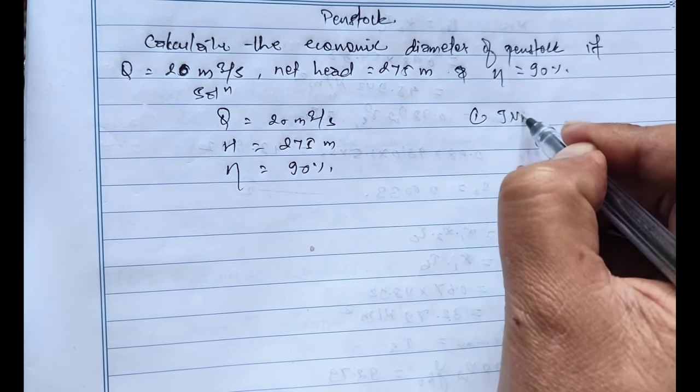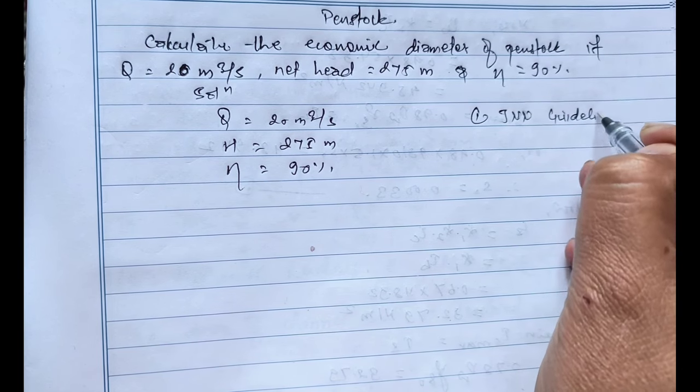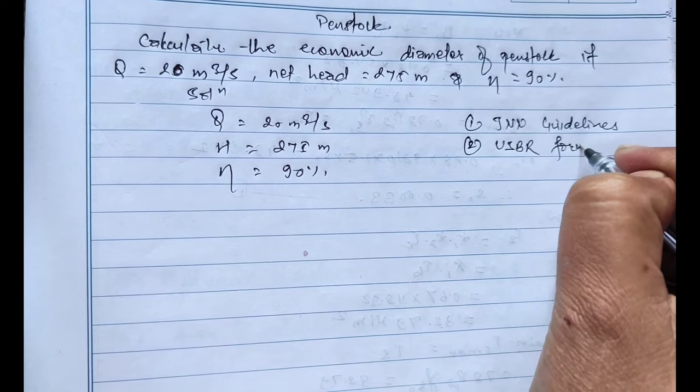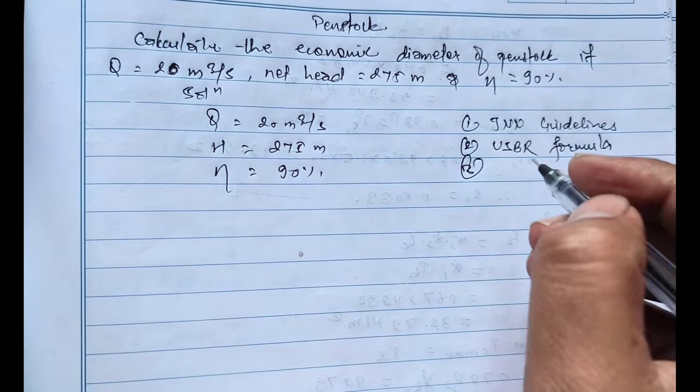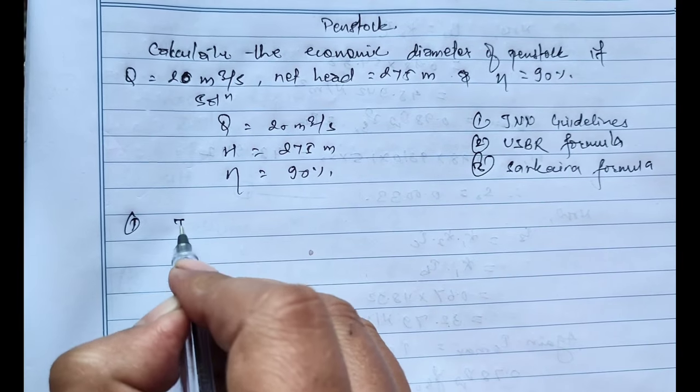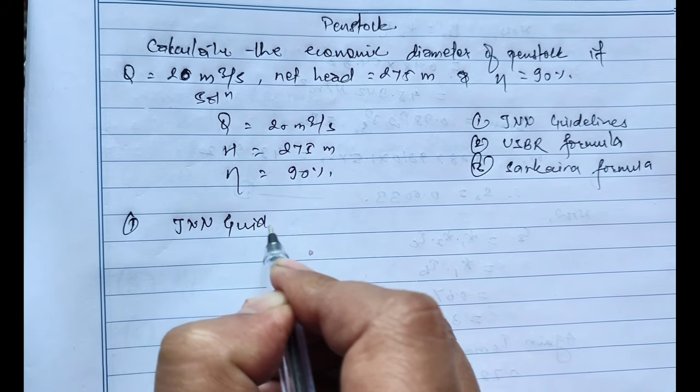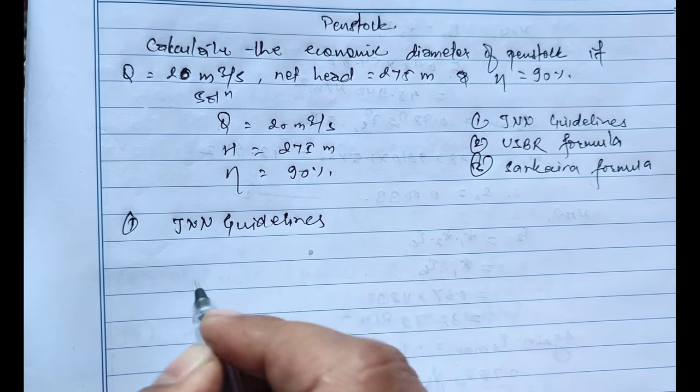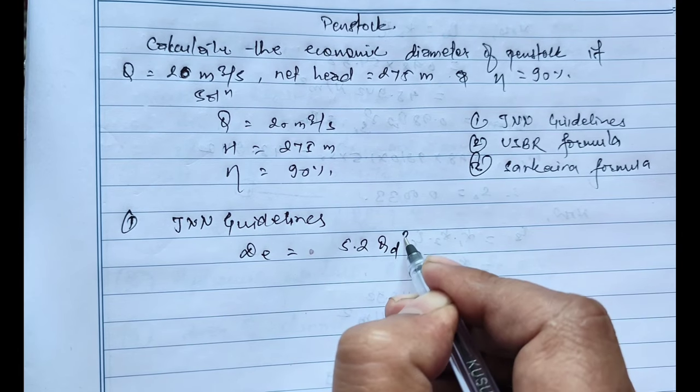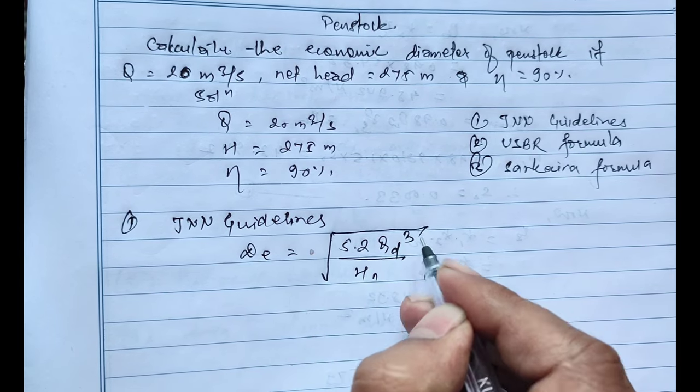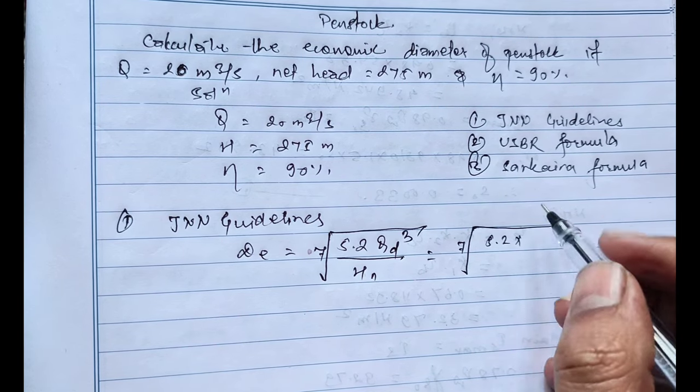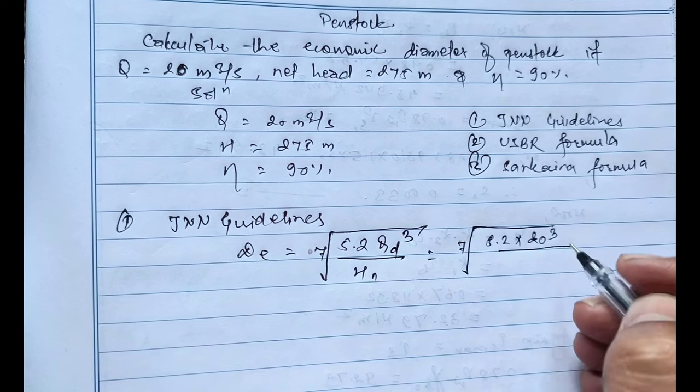First we will find out using JNN guidelines where D equals 5.22 times Qd to the power 3 divided by Hn, whole root over 7. Now placing the value, root over 7 equals 5.2 into the design discharge Qd is 20 to the power 3 divided by Hn equals 275. On calculating this, the result will be 2.048 meters.